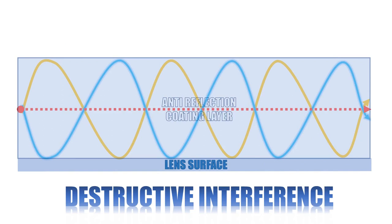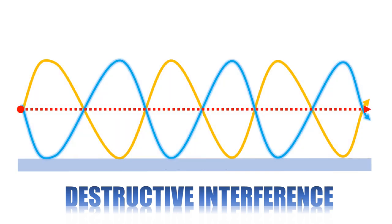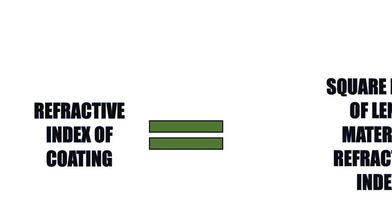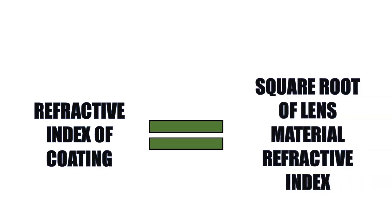The second is the amplitude condition: the refractive index of the coating must be the square root of the lens material's refractive index, again to cause destructive interference and prevent reflections. For example, for a lens with refractive index 1.74, the required coating refractive index is the square root of 1.74, which is 1.319.